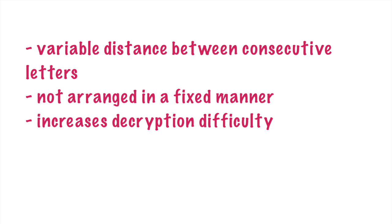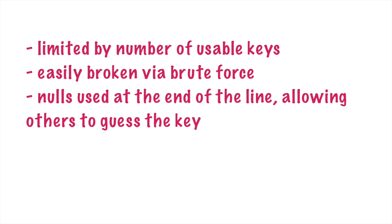This increases the difficulty of breaking the code. However, there are potential security vulnerabilities. The rail fence cipher is easy to apply but insecure in the sense that it is limited by the number of usable keys, especially for short messages, as the length of the message has to be at least twice the length of the key for there to be enough movement of letters when encrypting. It can be easily broken via brute force attack as a result. In a rail fence cipher, nulls can be used to identify the end of the line and thus allow the person intercepting the message to make a guess at the key. This can be avoided by replacing the nulls with random letters. Another way to strengthen this cipher is by keeping the spaces in between the words and using them as letters when filling in the table.